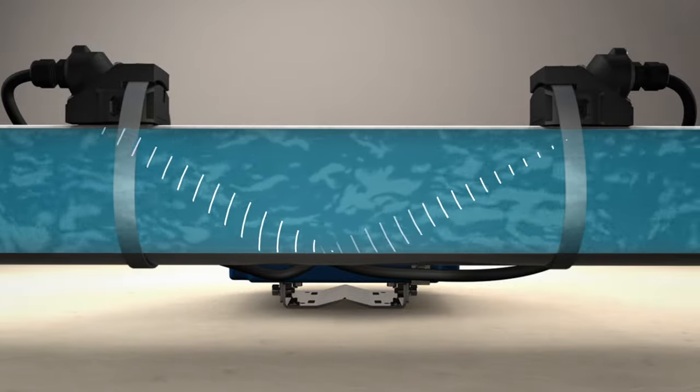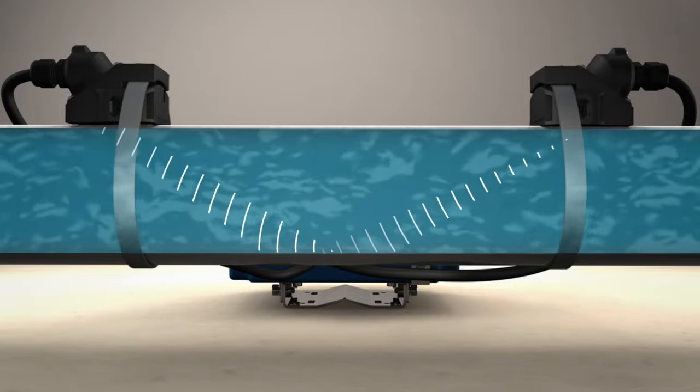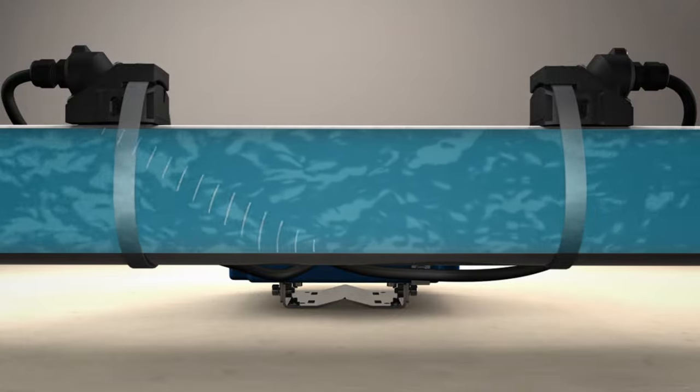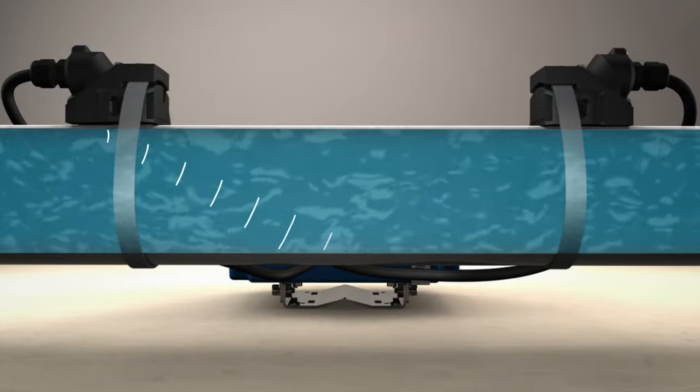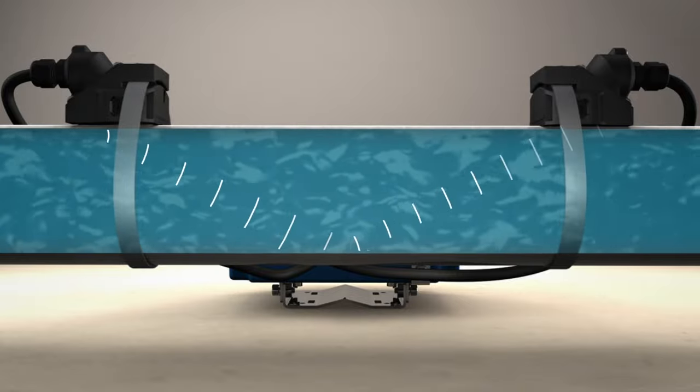A signal is transmitted through the pipe wall from one transducer to another. When the signal is moving with the flow, it travels faster. When the signal is moving against the flow, it travels slower.